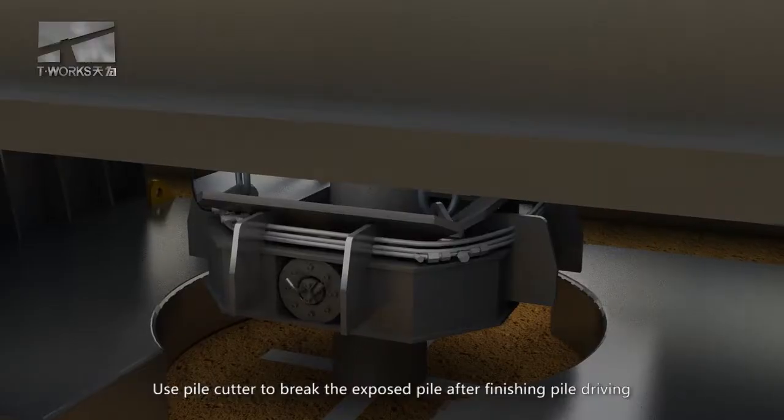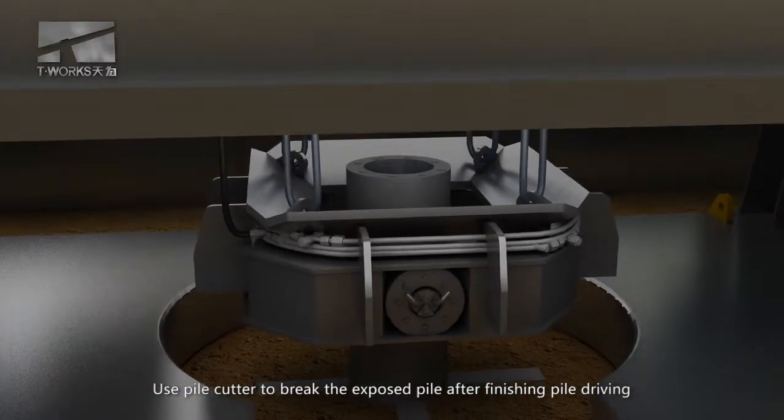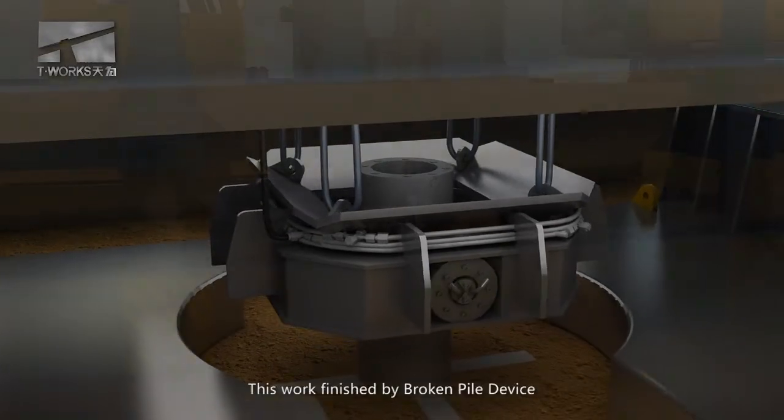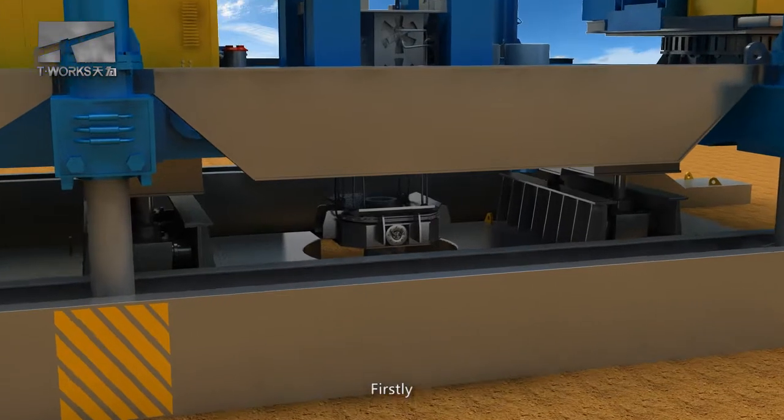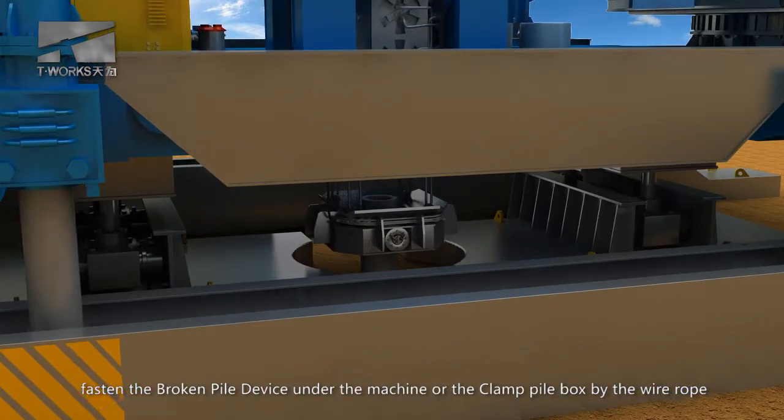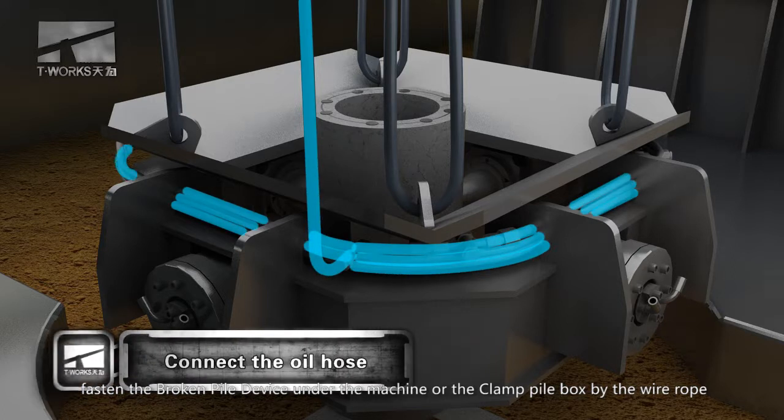Pile breaking process demonstration. Use pile cutter to break the exposed pile after finishing pile driving. This work is finished by broken pile device. Firstly, fasten the broken pile device under the machine or the clamp pile box by the wire rope.